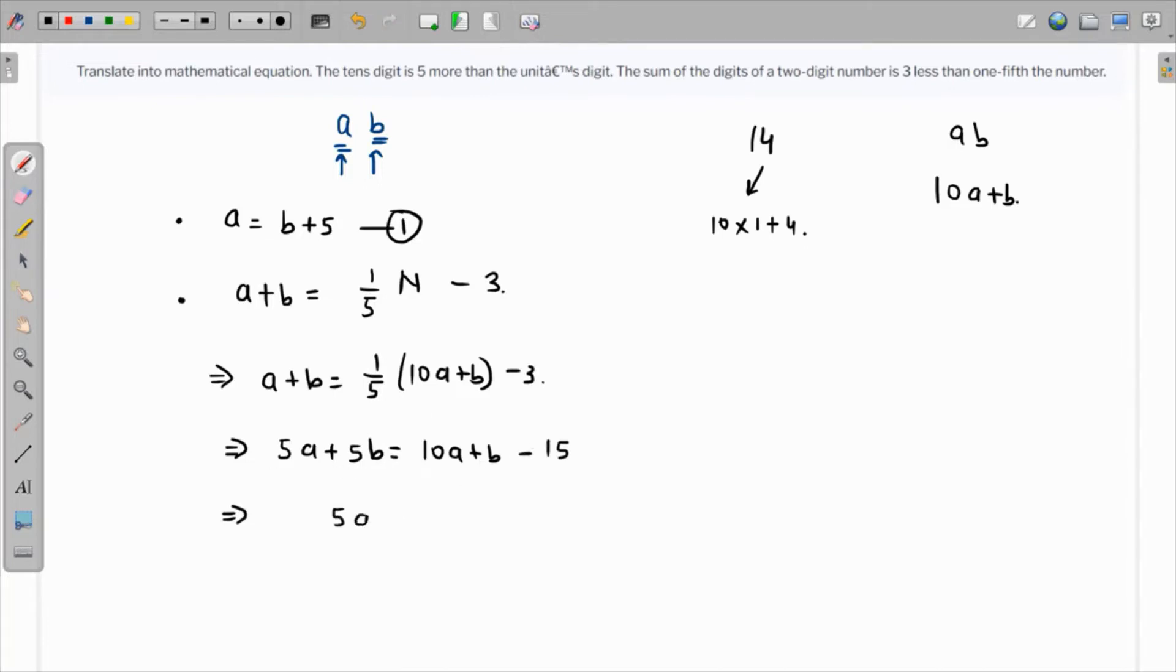Finally, if you bring everything over, both these terms over to the right, we have 5a - 4b - 15 = 0. This is equation two. We just had to translate this into equations, so these are the two required equations. Thank you.